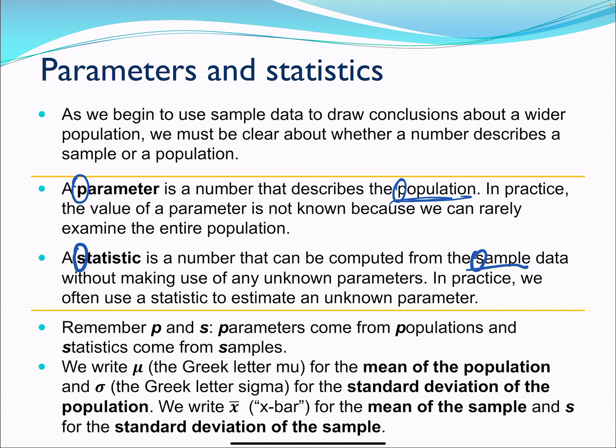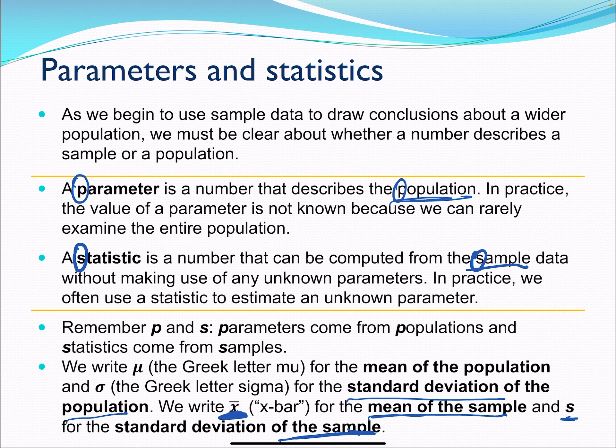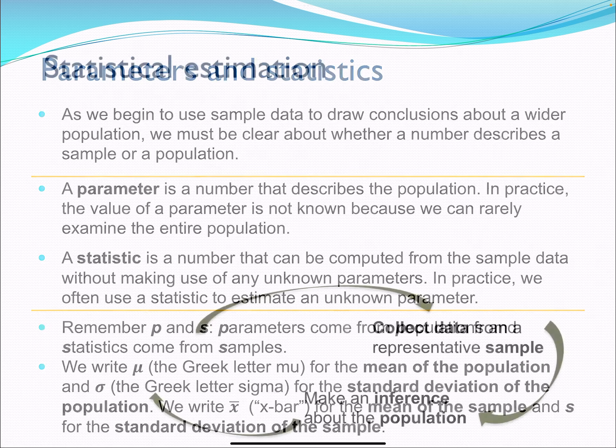Mean is our mu of our population. Again, this is typically unknown. Sigma is our standard deviation for the population. We write X bar for the mean of our sample and S for the standard deviation of our sample. So that's the difference between parameters and statistics, and we use good statistics to estimate a parameter.